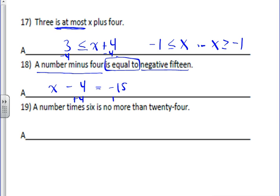Add four both sides to solve. And you get x equals, well, negative 15 plus four is negative 11. And that's your answer.